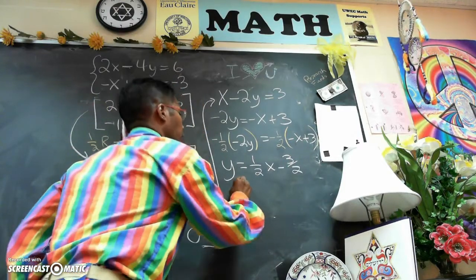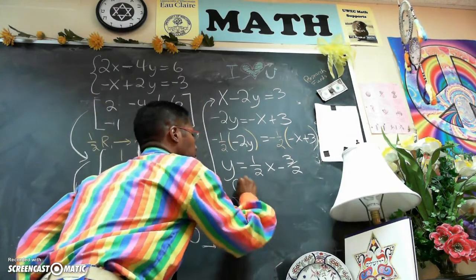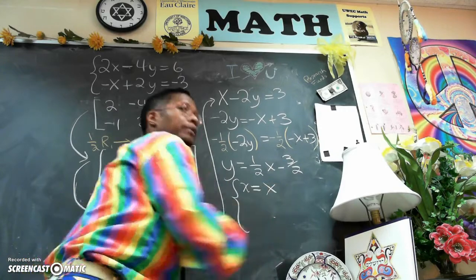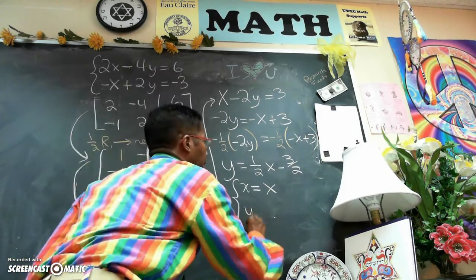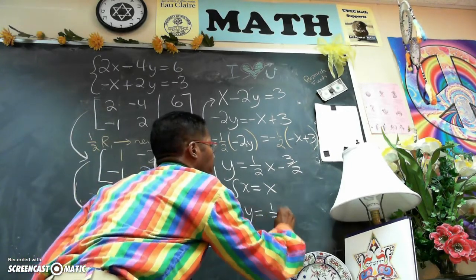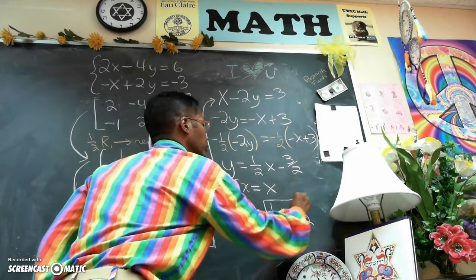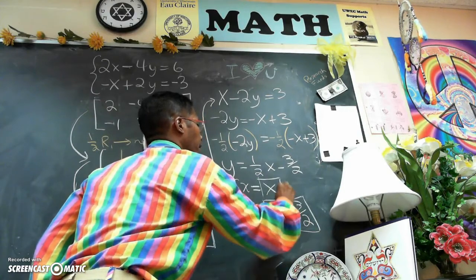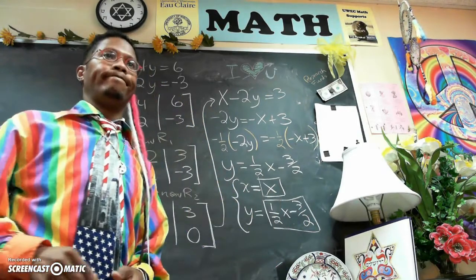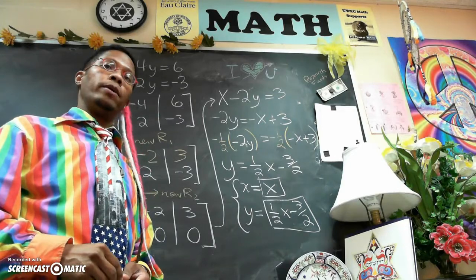So now our infinitely many solutions, I can say let x equal x and let y equal 1 half x minus 3 halves. And those are our two solutions for y and for x. All right.